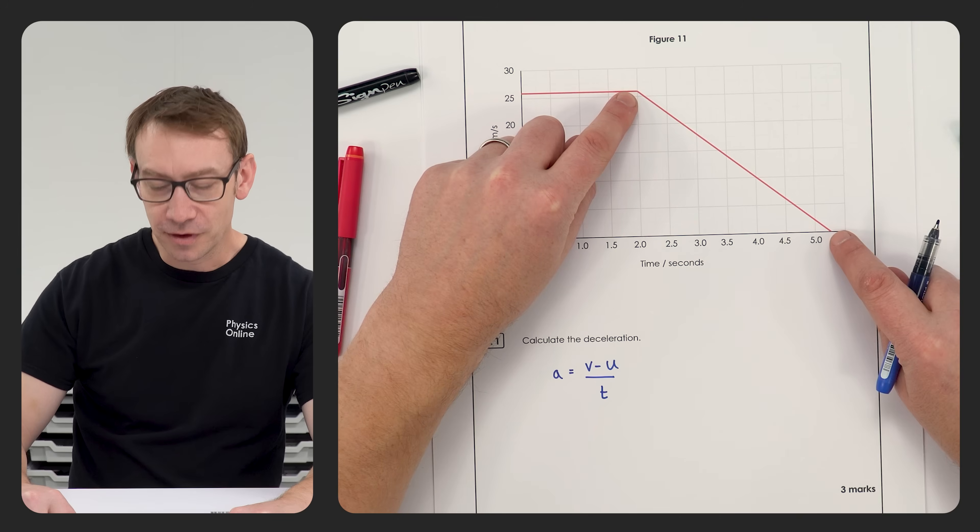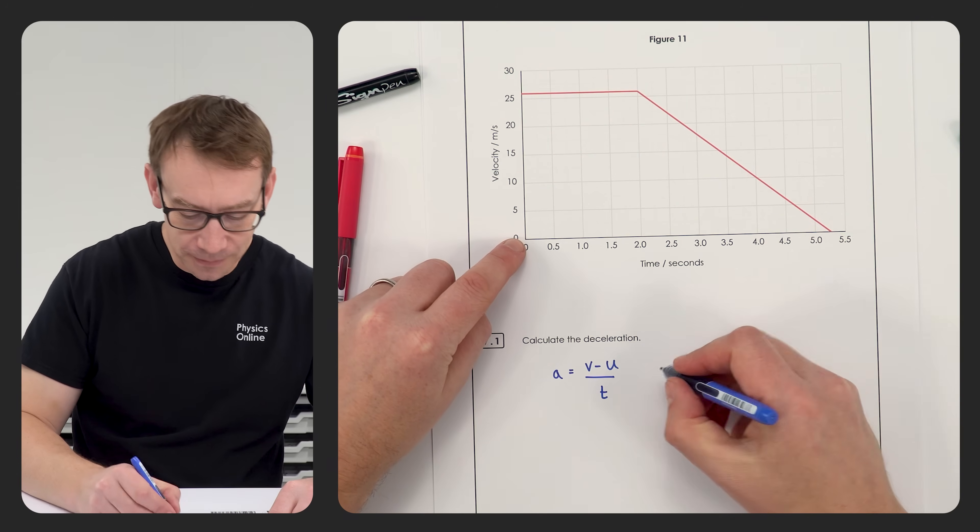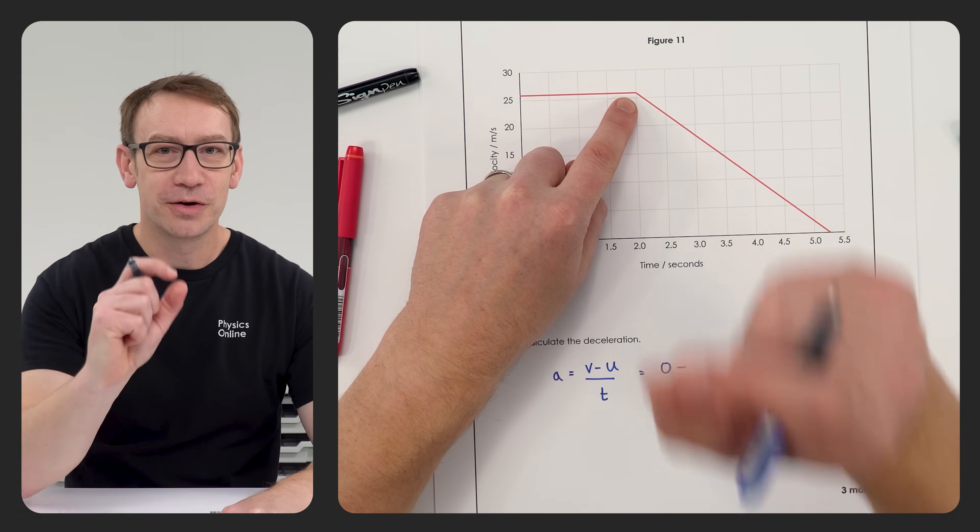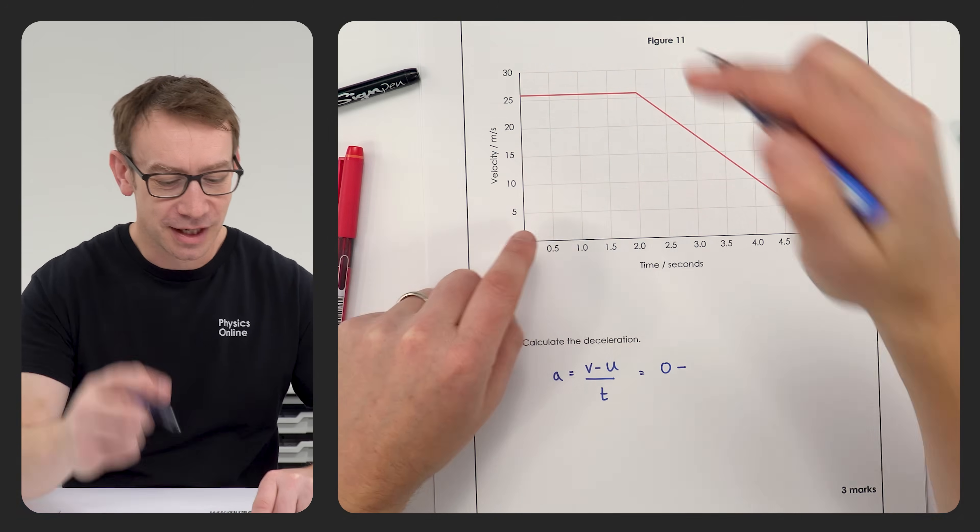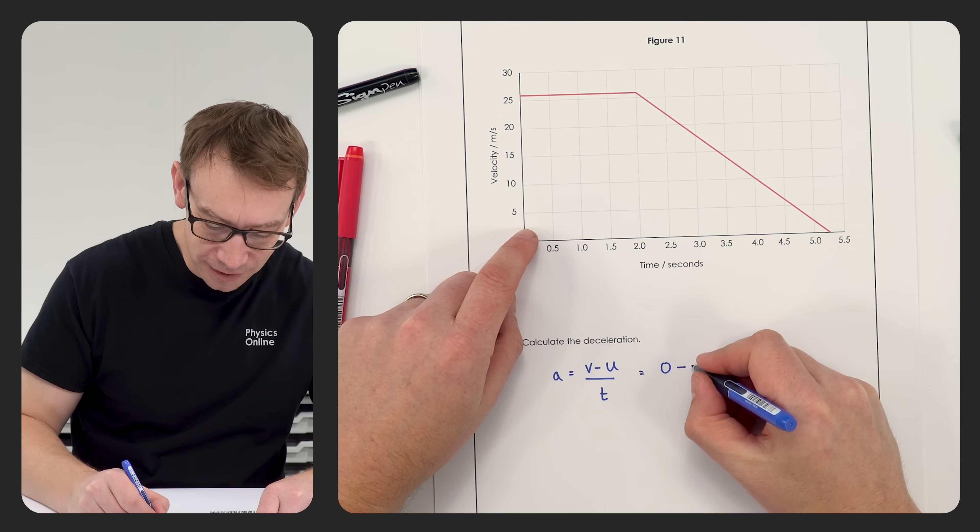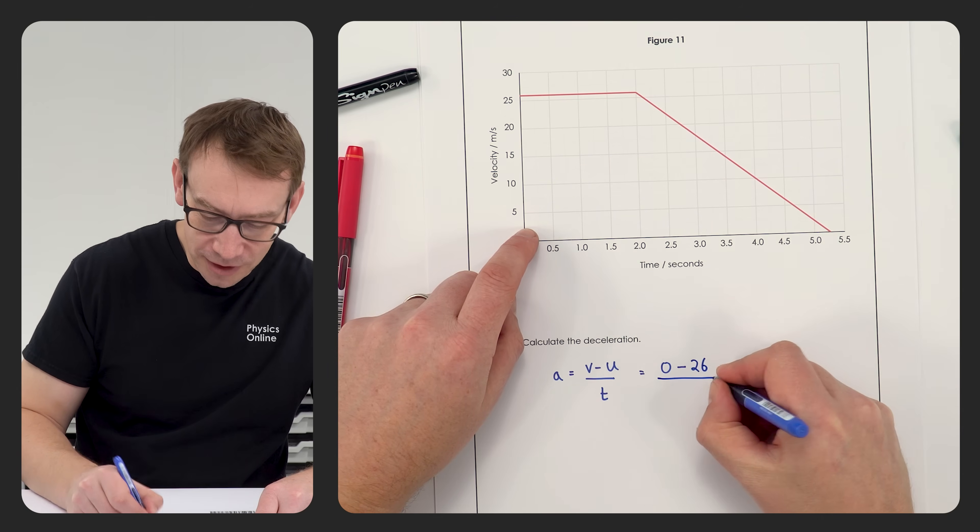Now the final velocity is going to be zero. The initial velocity is not 25, which is what a lot of people put. If we look at the line, it's actually at 26 meters per second.